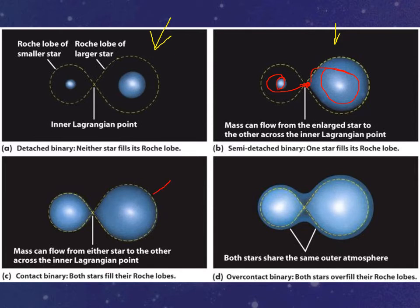If both stars are filling their Roche lobes, we have what we call a contact binary, in which the two stars are touching each other at that spot right there between.